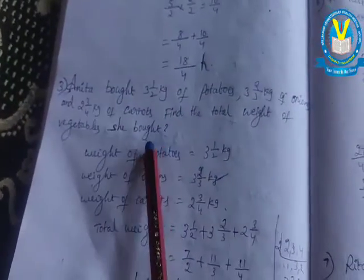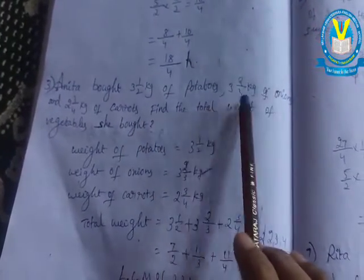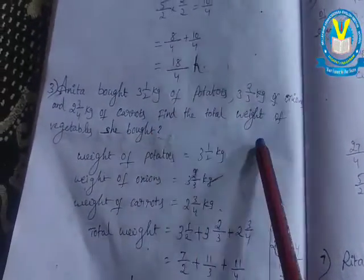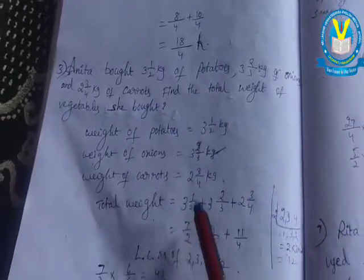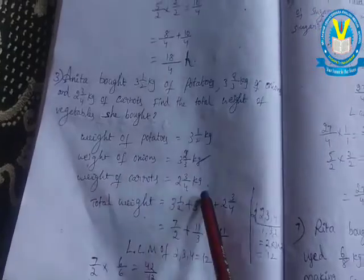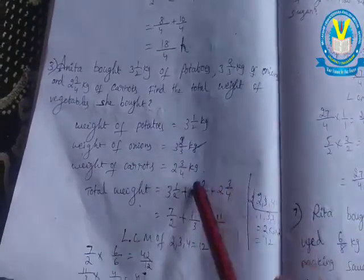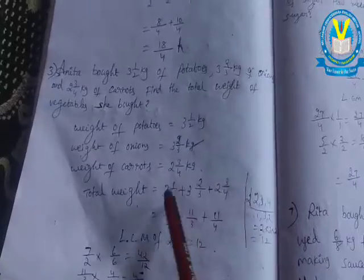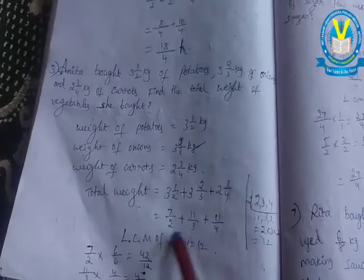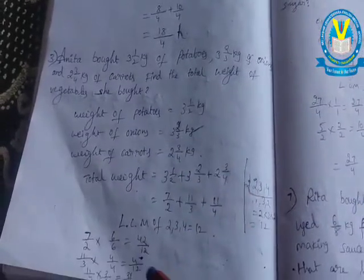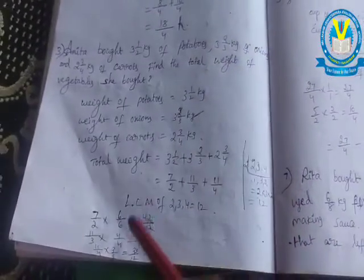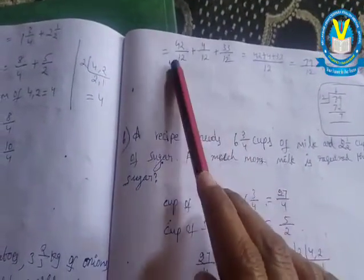Next, third one. Anita bought three and one-half cases of potatoes, three and two-thirds cases of onions, and two and three-fourths cases of carrots. Find the total weight. Total weight means all three items are added - weight of potatoes, weight of onions, weight of carrots. These are all mixed fractions, so change into improper. These are unlike fractions, so change to like fractions by finding the LCM of twelve.